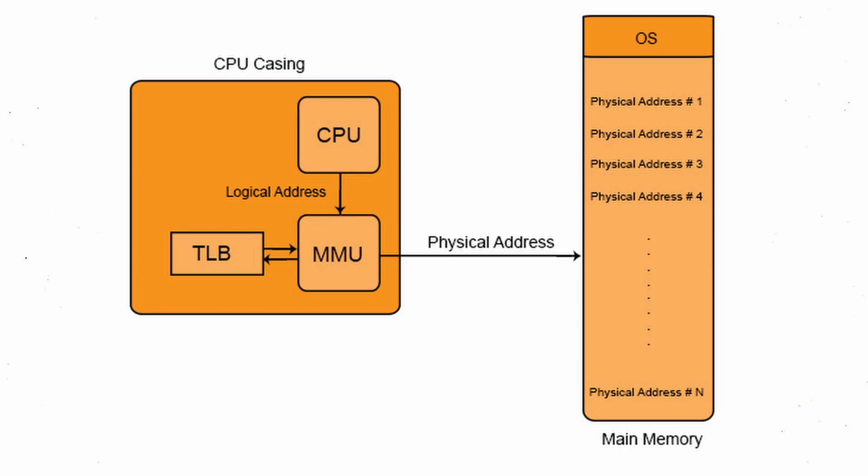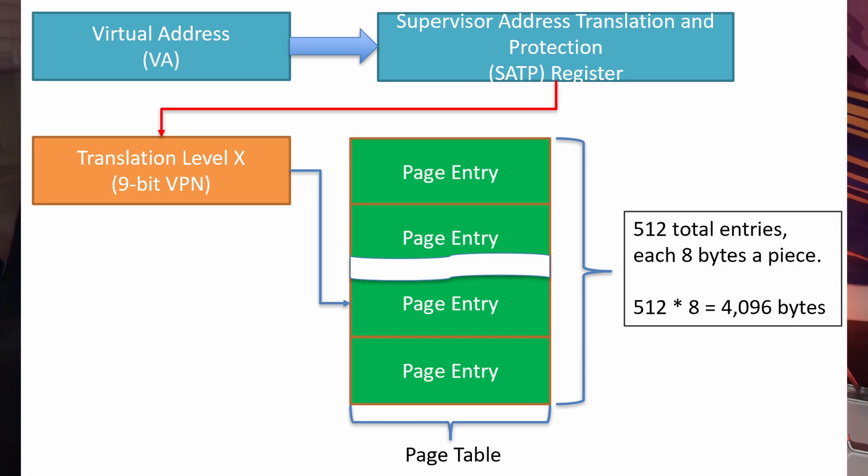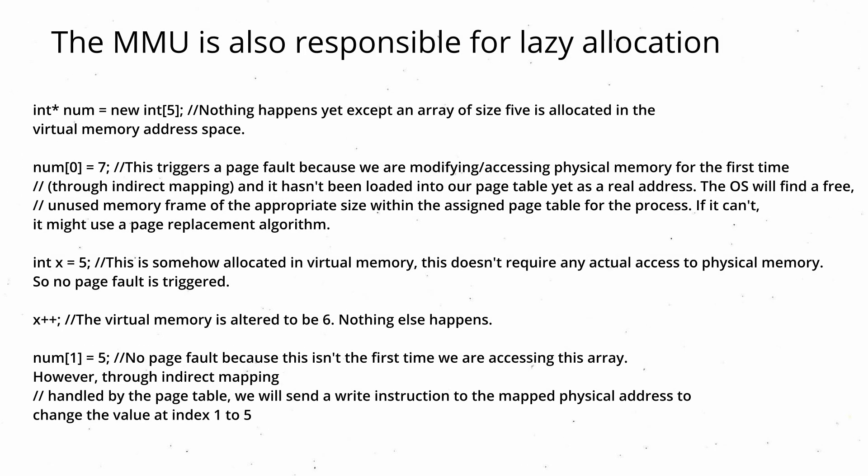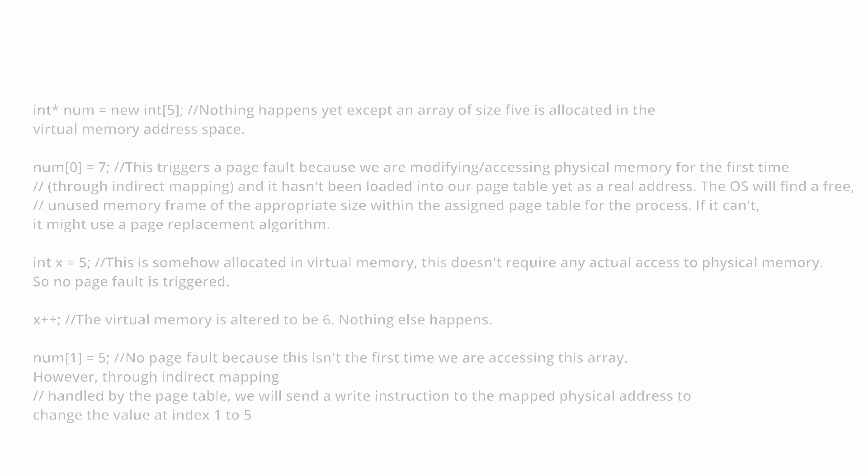The memory management unit, or MMU, can be thought of as a librarian helping you find a book from a catalog. The catalog has a virtual page number, or VPN, that corresponds to a page table entry. Think of the VPN as a key in a map structure, where the value is a page table entry — the lookup would be very fast. Each virtual memory page can contain a number of variables and data structures contiguously, since it is essentially a fixed-size block dedicated to the process.